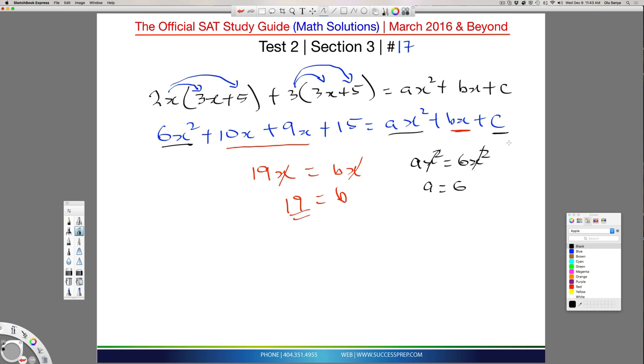What if they had said what is C? If they had said what is C, well, C is a constant. It has no x or x squared attached to it, so it will be equal to 15, so C will be 15.